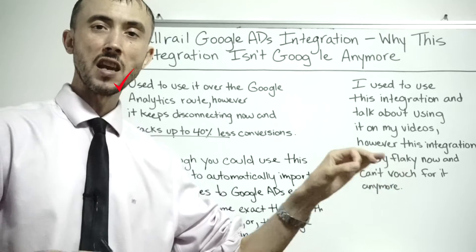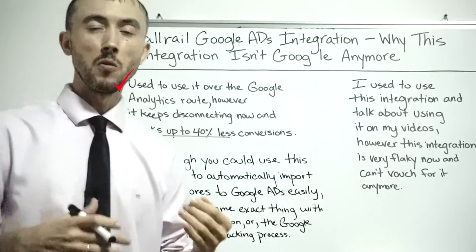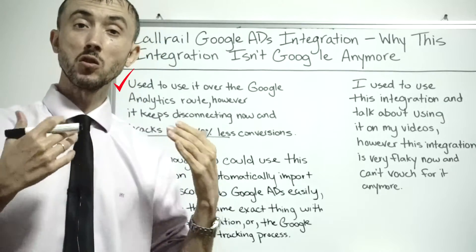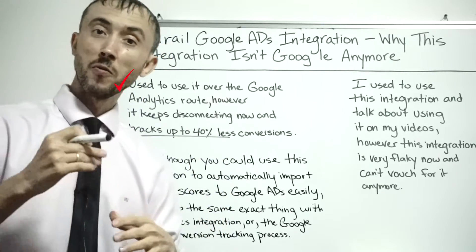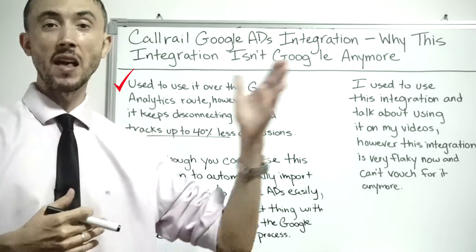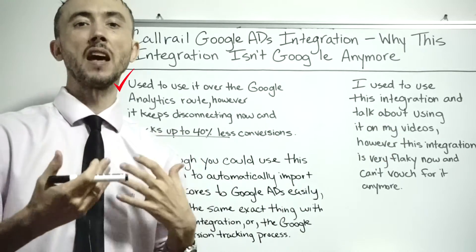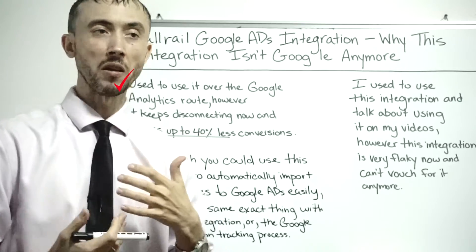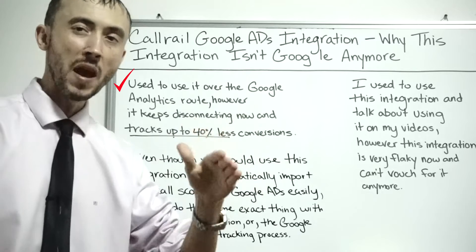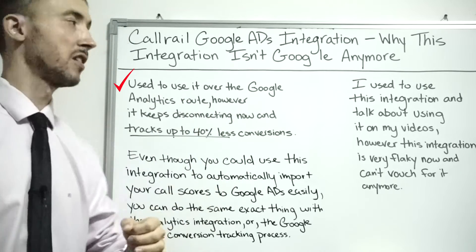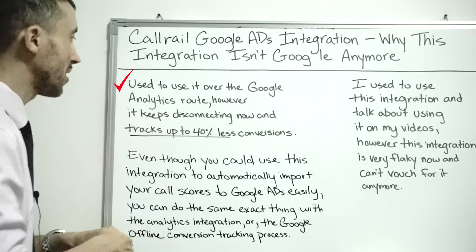Then we switched to using the CallRail to Google Ads integration directly, to cut out the Google Analytics step. It was simpler when we wanted to score phone calls — deciding whether a call was good or not and passing that to Google Ads. But we've switched back to going through Google Analytics again, because the Google Ads to CallRail integration keeps disconnecting.